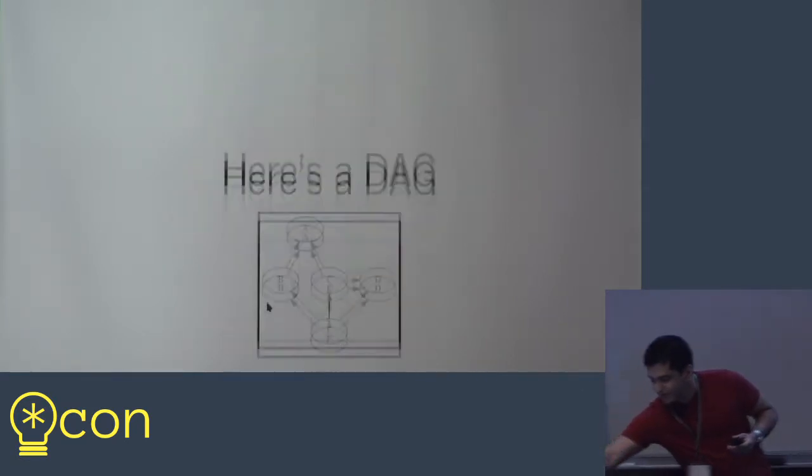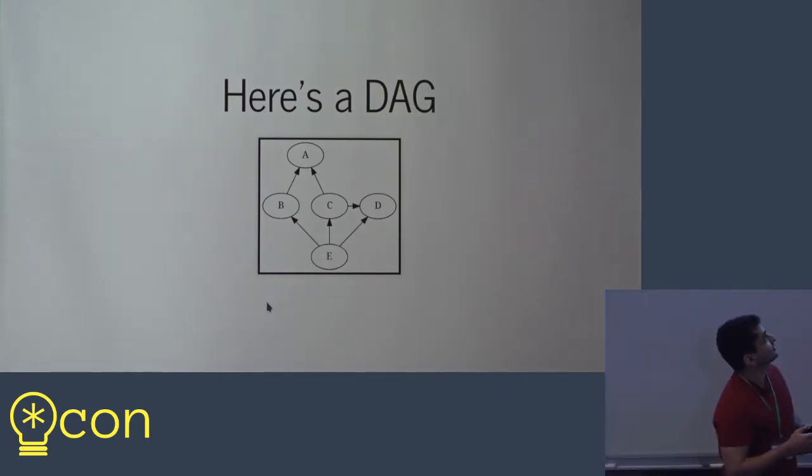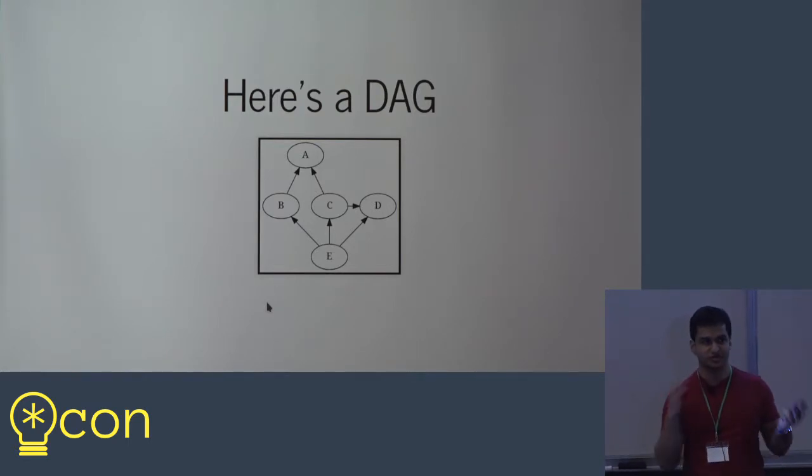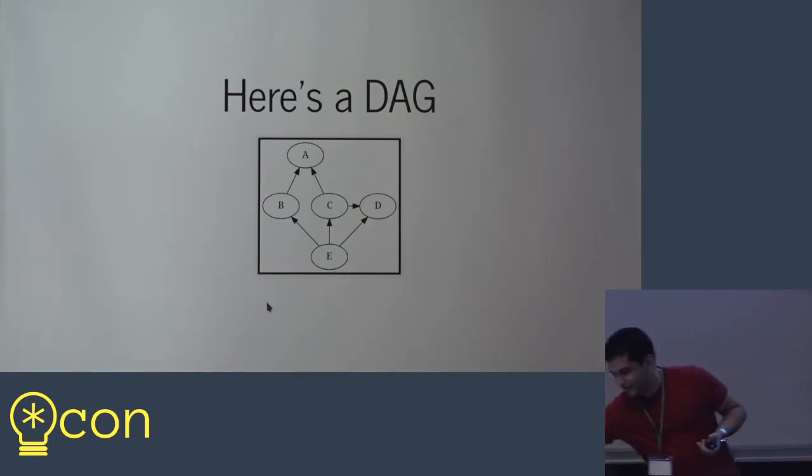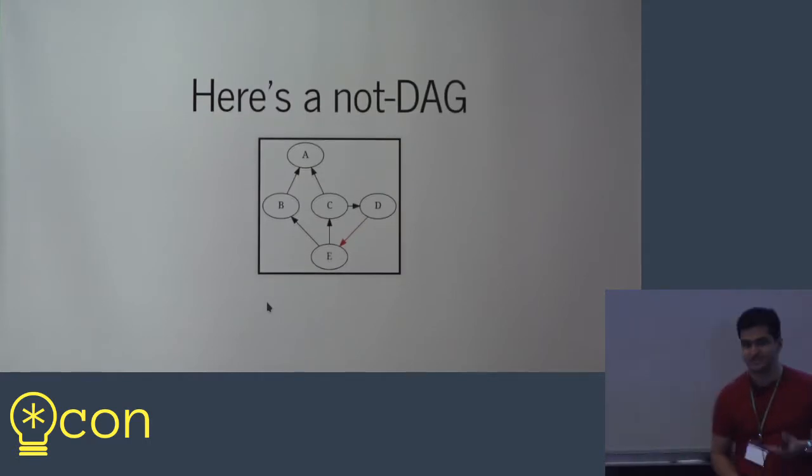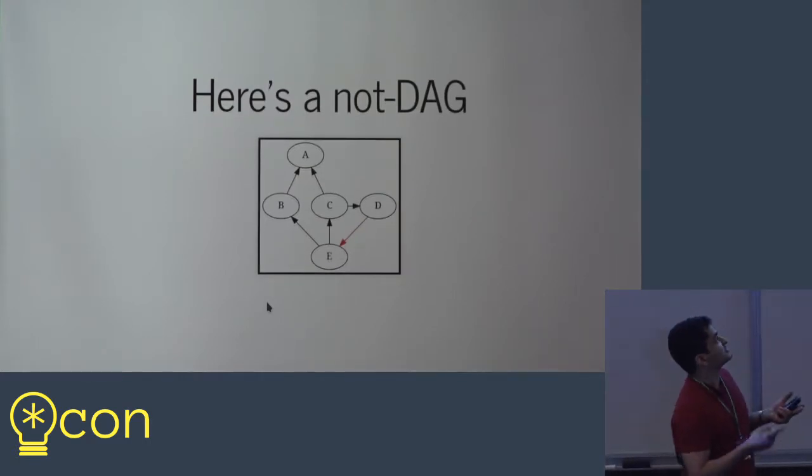So here's an example of a directed acyclic graph. As you can see, the way graphs work in Git is that a commit points to its parents. So the initial commit in a repository has no parents. And other commits can have multiple parents. So there's an example of a valid directed acyclic graph. And if I make one small change, it's now no longer a directed acyclic graph because there's a cycle. I can go from C to D to E forever.